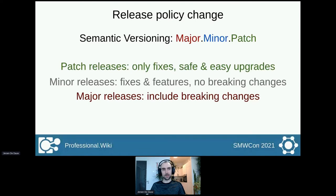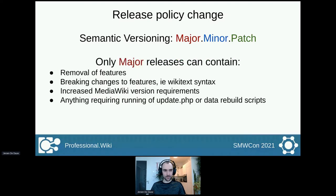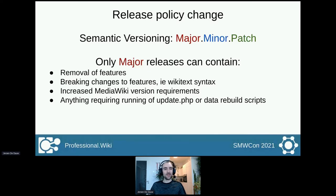The thing we changed and codified with the new release policy is what we consider to be breaking changes. Obviously, removing a feature is a breaking change, and making a breaking change to a feature itself — like some syntax of Wikitext — is also a breaking change. What we've newly included is requiring a new version of MediaWiki. For instance, with Semantic MediaWiki 4, we are now requiring MediaWiki 1.35. So that's part of why this is a major release, and why we're switching to 4.0 rather than 3.3.